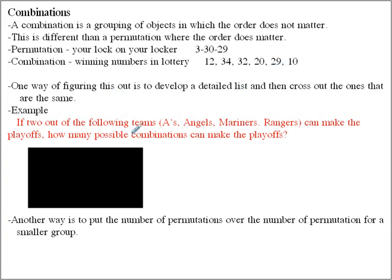So one way of figuring this out is to make a detailed list and then cross out the ones that are the same. And for this example, if you have two of the following teams, the A's, the Angels, the Mariners, and the Rangers can make the playoffs. How many possible combinations can make the playoffs?